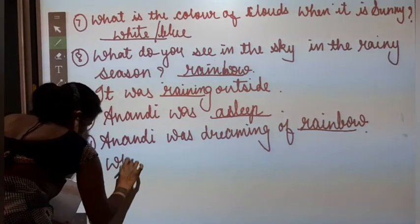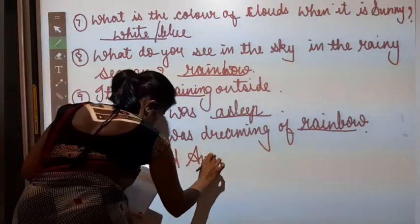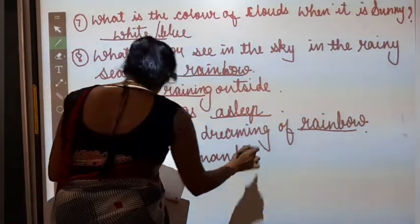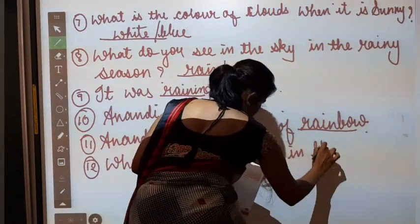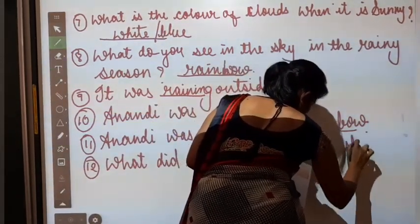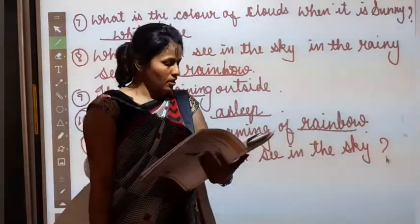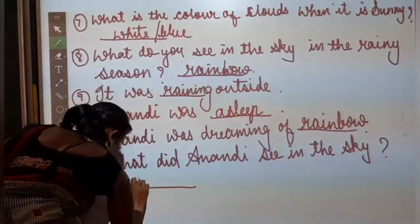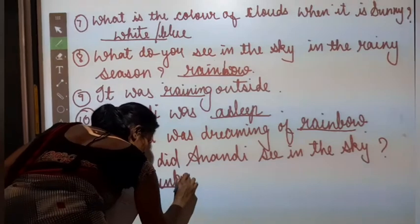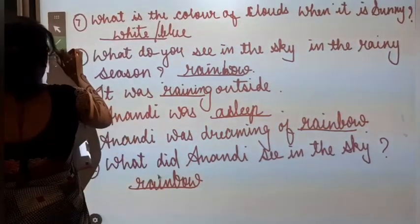What did Anandi see in the sky? Anandi kya dekha? Stars, rainbow, moon and clouds. So what did Anandi see? She saw rainbow in the sky. She saw rainbow in the sky. Okay?